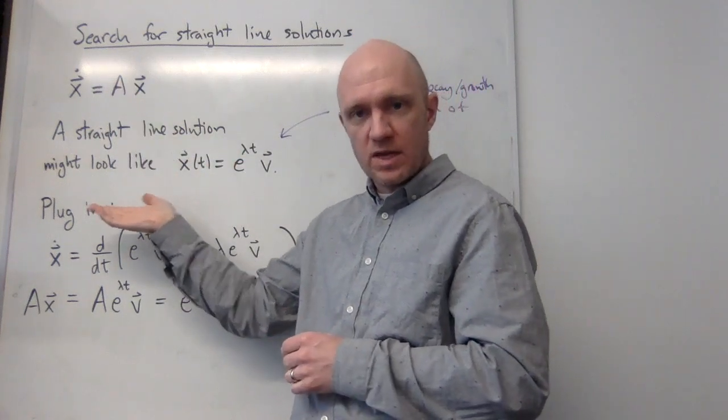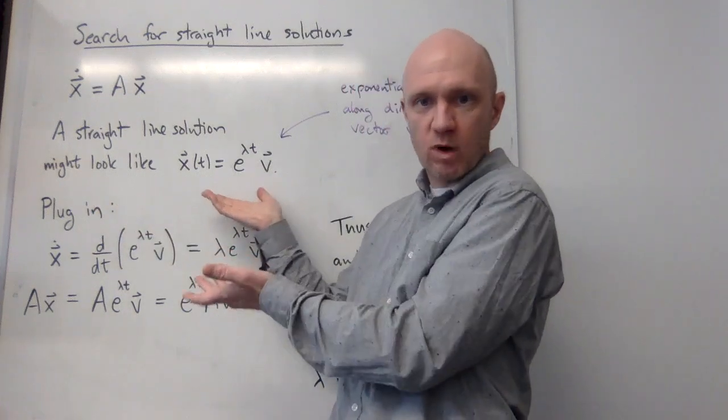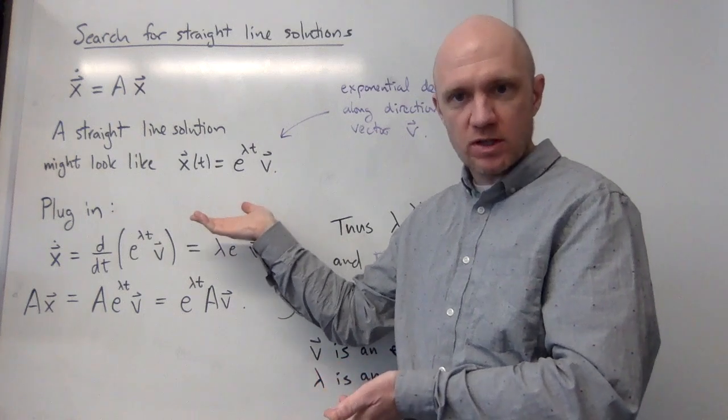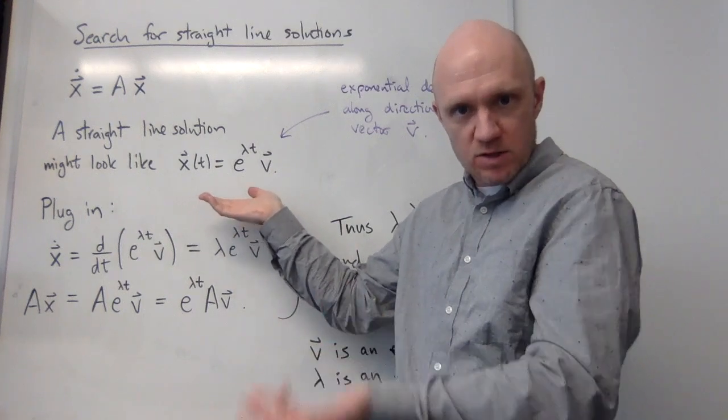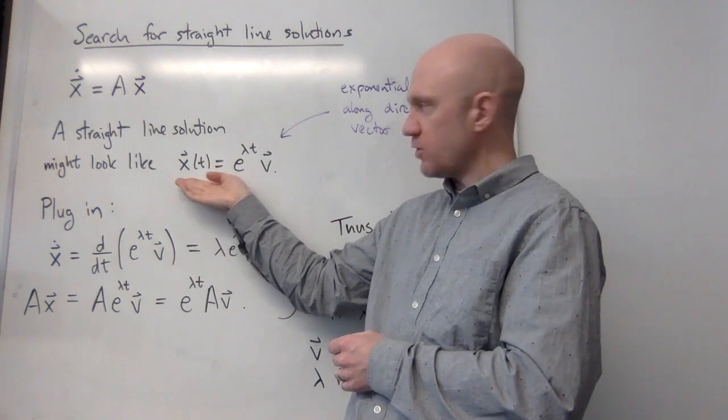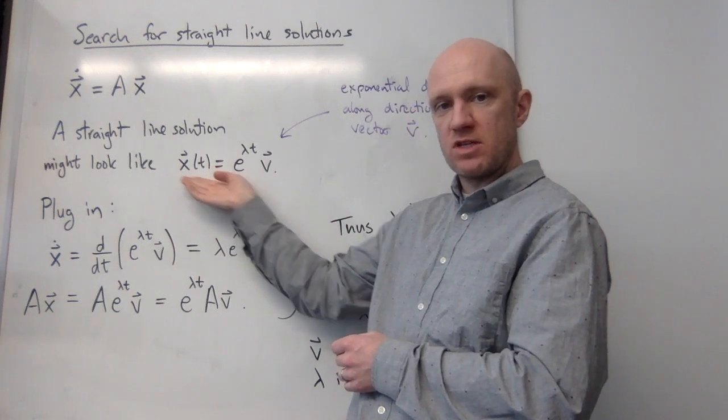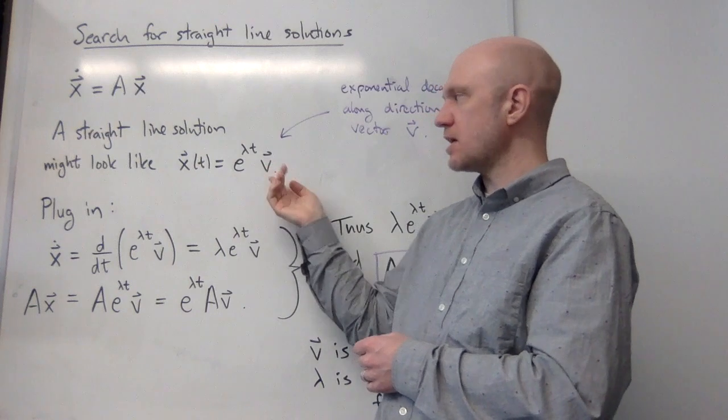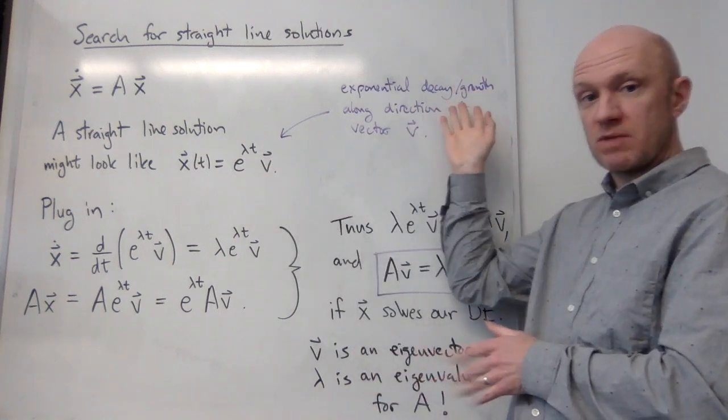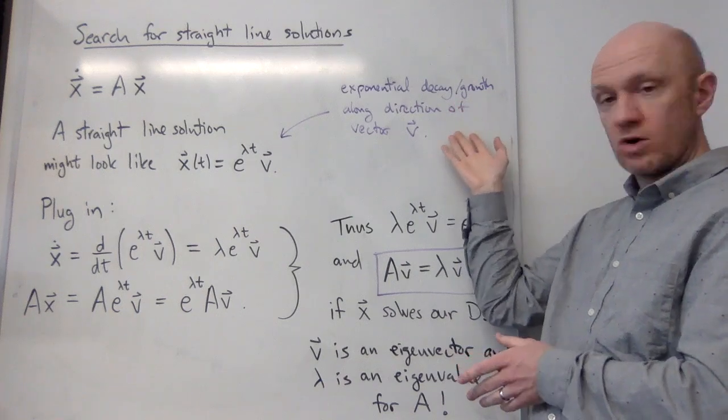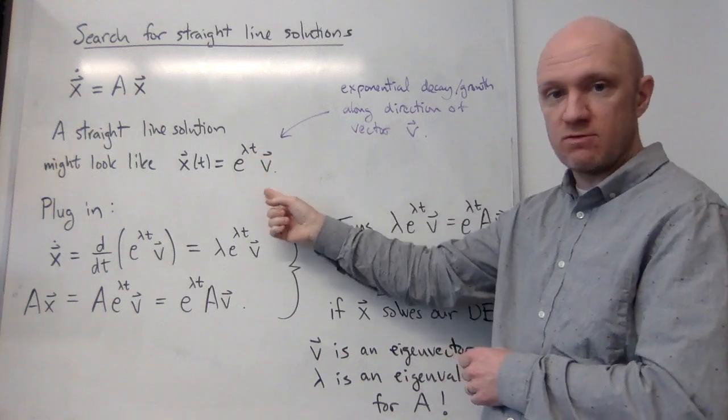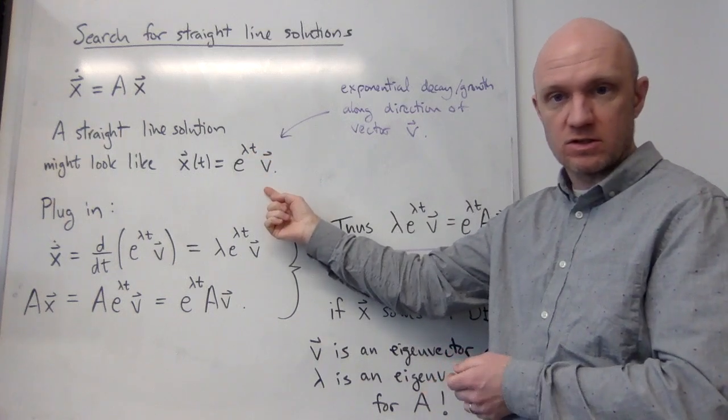And so what I'm going to do is hypothesize what one would look like. I've seen exponential decay or growth along straight line solutions before already in these previous examples. So let's suppose that I'm looking for a solution that has the form x of t equals e to the lambda t times v. Here, that means that I'm just looking for something which exponentially decays or grows along a constant direction v. So lambda is some constant and v is some constant vector.